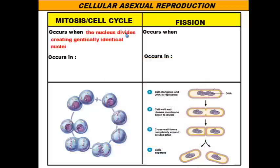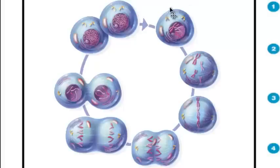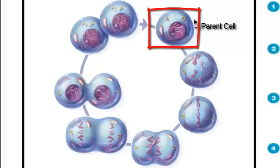Mitosis in the cell cycle occurs when the nucleus divides, creating a genetically identical nucleus. Because the nucleus will be genetically identical to the original, the new cell will also be genetically identical to the original cell. This occurs in organisms that have nuclei in their cells — called eukaryotic cells. Looking at this diagram, we have a parent cell with DNA that gets replicated into chromatid pairs — each half of these X shapes.